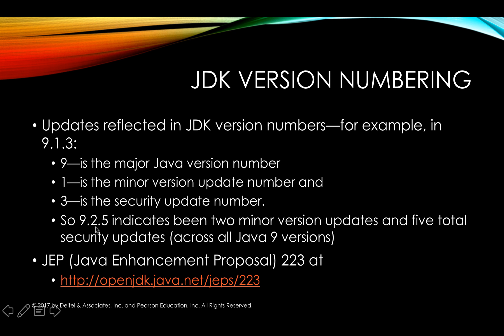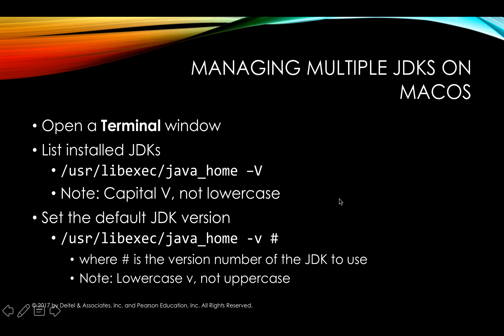If you want to learn more about the changes to the JDK version numbering, you can check out Java Enhancement Proposal number 223 at the link provided. Now let's take a look at the basic steps you'll need to perform to select the default JDK on your Mac. First, we're going to open a terminal window. Then we're going to use this command to list out the installed Java Development Kits: in the user folder under libexec, there's a java_home command, and you follow that with the command-line argument dash uppercase V. Notice that's an uppercase, not a lowercase letter. That will list out every version of the JDK installed on your system, and we need those version numbers to select which one will be the default JDK.